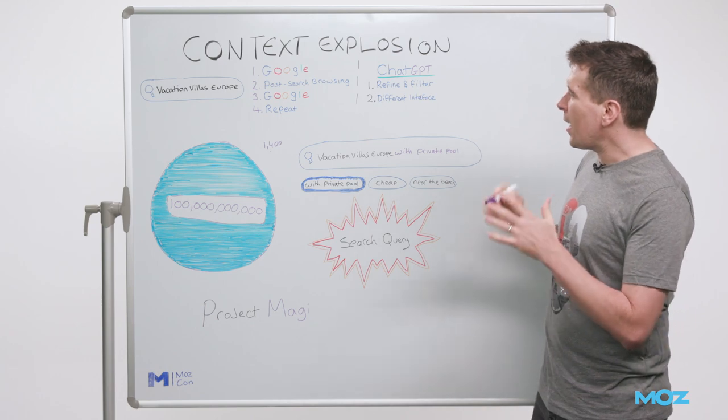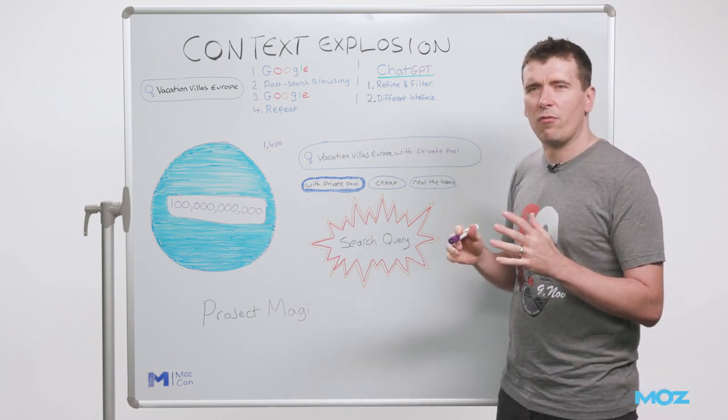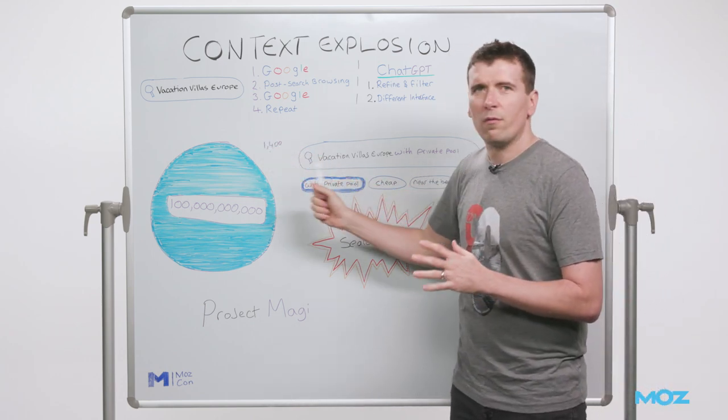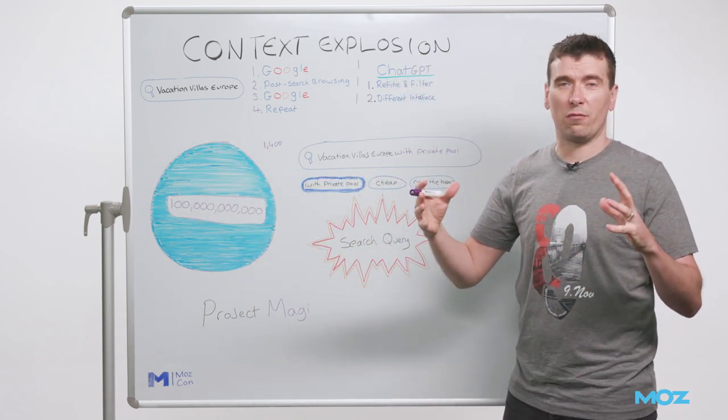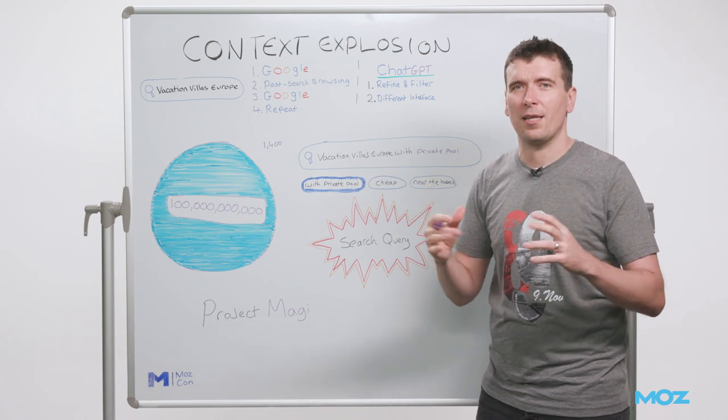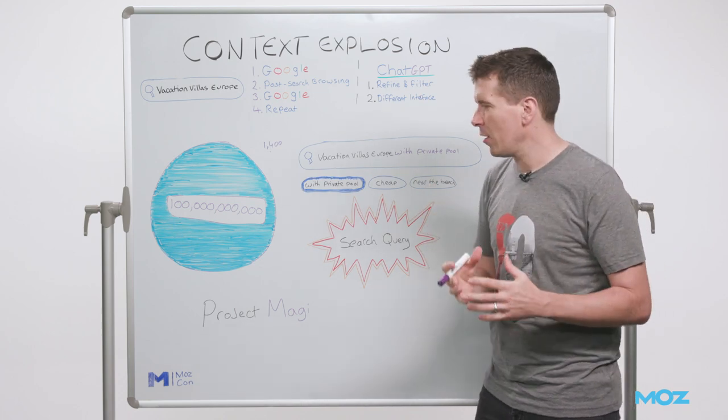So you can see that if search was to shift from using this sort of model for representing entities and context to something like this, the magnitude of change would be absolutely massive. It would have a very profound effect on search and SEO.